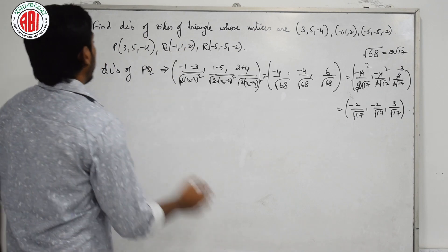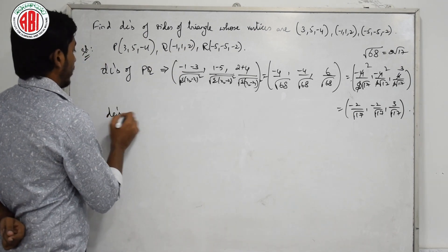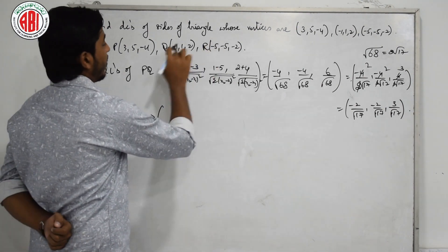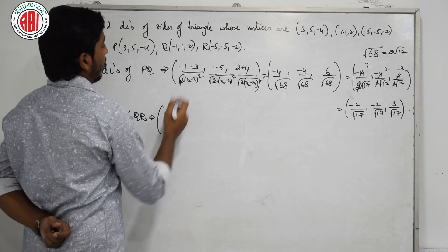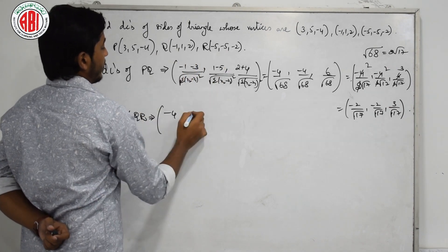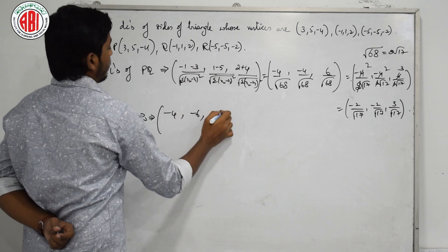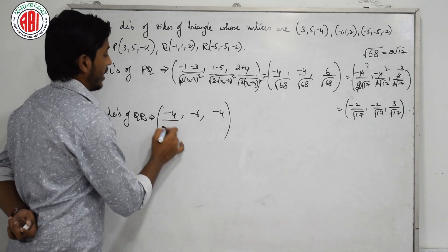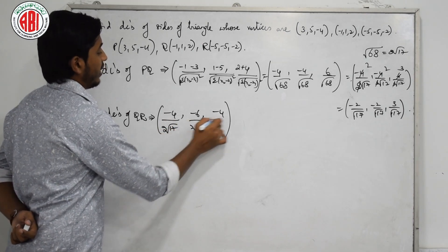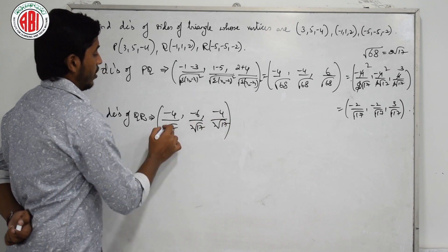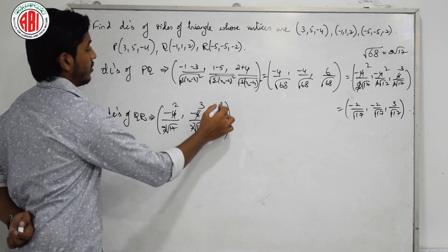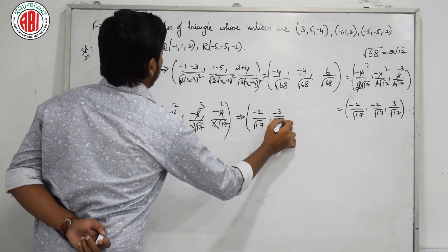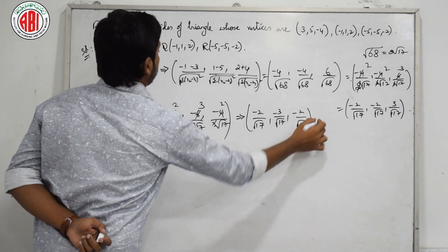Now let us find the DCs for the second side, QR. DCs of QR: the differences are minus 5 plus 1 equals minus 4, minus 5 minus 1 equals minus 6, minus 2 minus 2 equals minus 4. The denominator is the square root of 4 squared plus 6 squared plus 4 squared, which is again root 68 equals 2 root 17. Therefore the DCs of QR are: minus 2 by root 17, minus 3 by root 17, minus 2 by root 17.